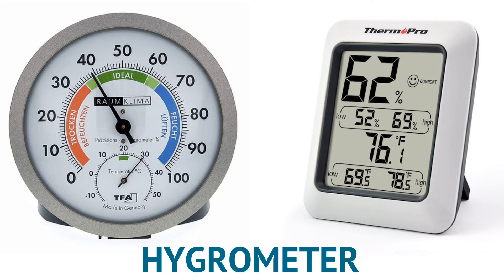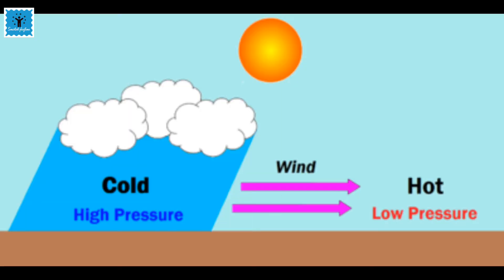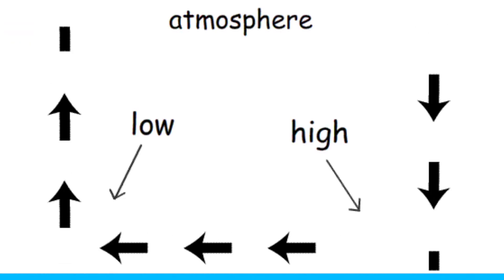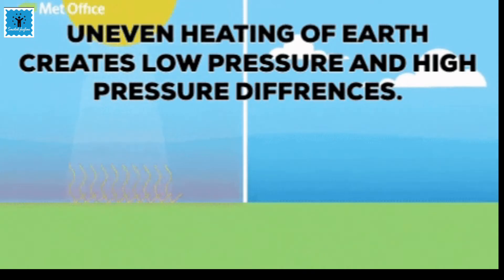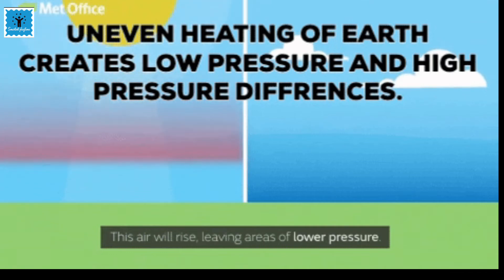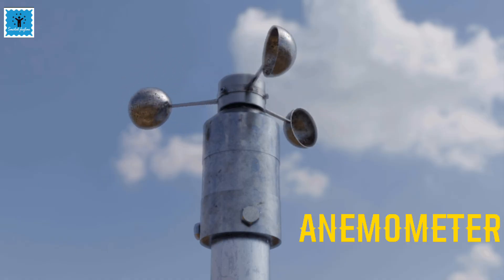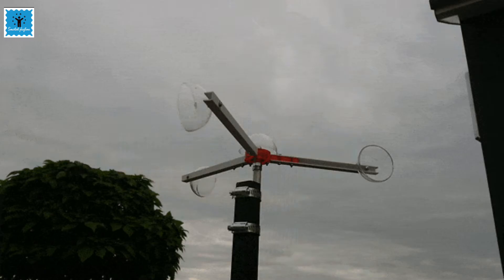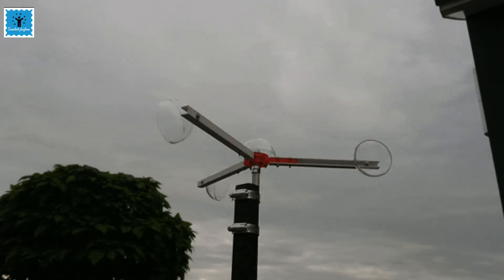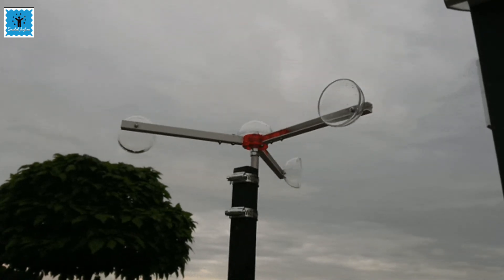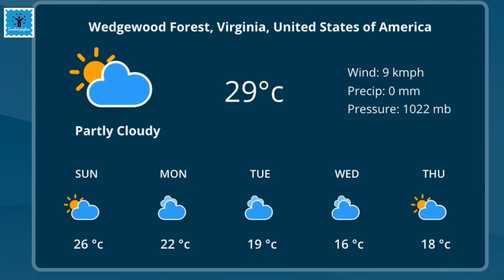The fourth element of weather is wind speed. It is caused due to the difference in air pressure — air moves from high pressure to low pressure — and it usually occurs due to the difference in temperature. Wind speed is measured by a device called an anemometer, which measures wind speed and direction. It is a very important tool for meteorologists to study weather patterns.